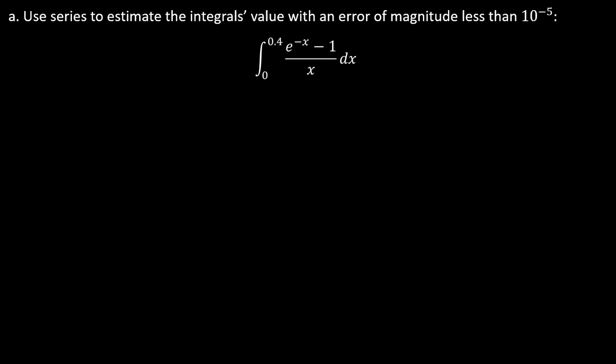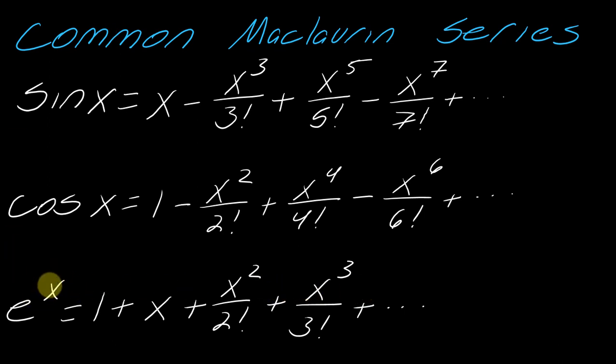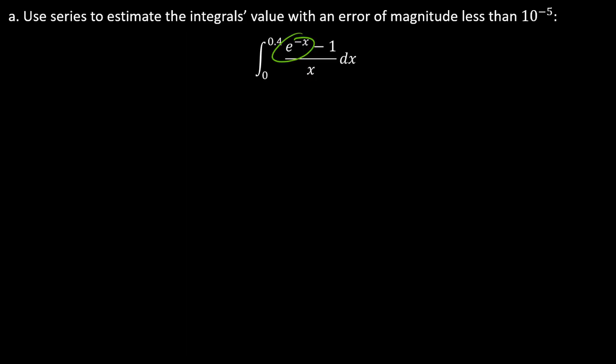What I'm going to do is I'm going to literally restate all of this, but where I have this e to the negative x, I'm going to replace it with this series. Where I have an x, I'm going to replace every x with a negative x. So this will be 1 minus x plus negative x squared over 2 factorial, plus negative x cubed over 3 factorial.